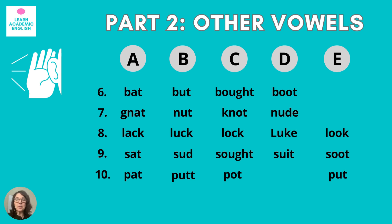Some of these can be a little bit hard because you might not know the word that I'm saying. But be sure to look at all of the words and try to figure out which one I am saying by eliminating the words that I am not saying. I'll go through them all one more time — pause the video as needed. Number six: but. Number seven: not. Number eight: luke. Number nine: soot. And number ten: put.